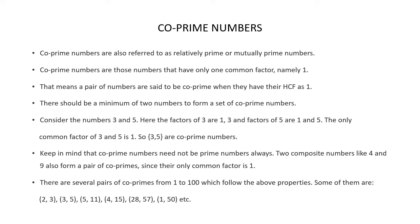There should be a minimum of two numbers to form a set of co-prime numbers. Three numbers can also form a set of co-prime numbers, and four numbers can also form a set of co-prime numbers. But the minimum number should be 2.